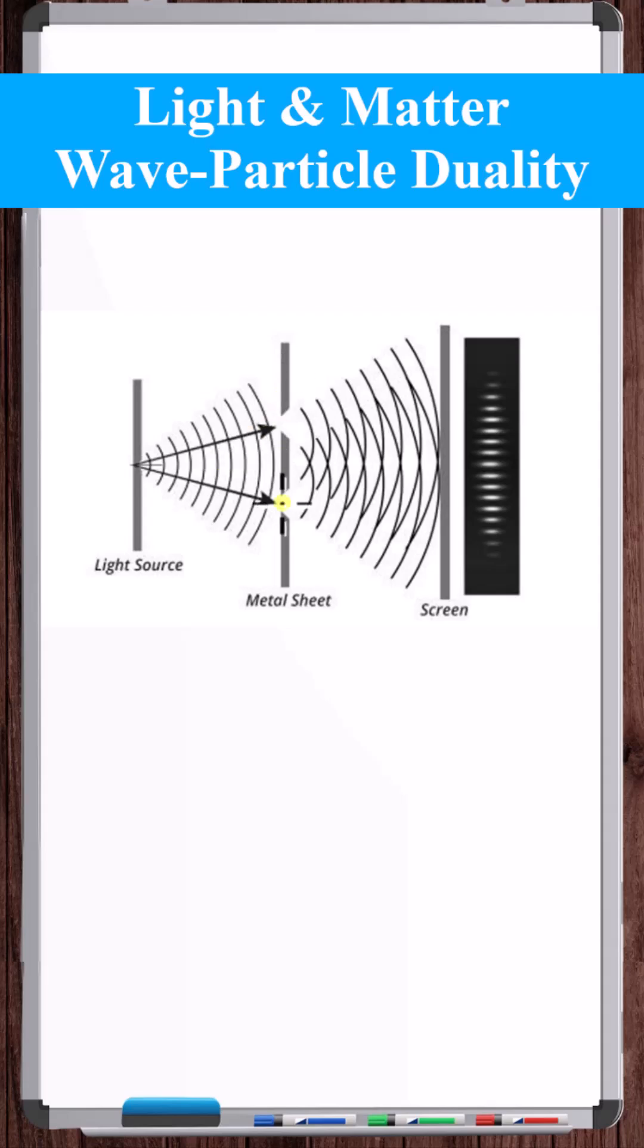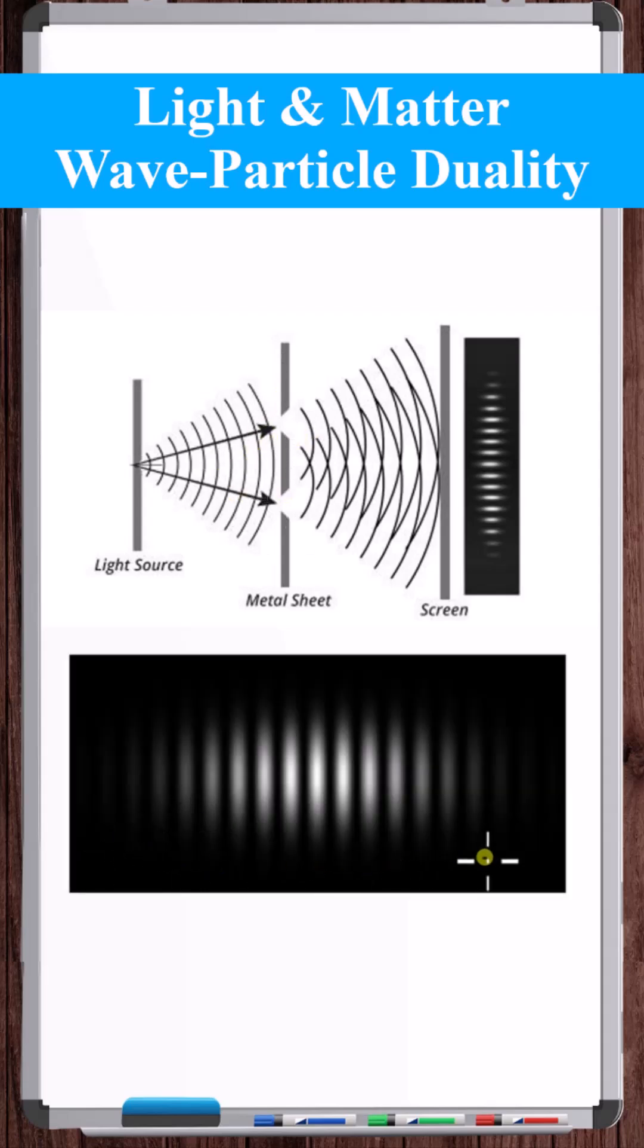A light source is shined at a sheet or plate with two slits. What results is an interference pattern like shown here, demonstrating that light is a wave.